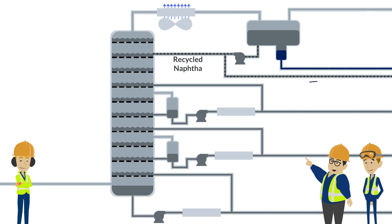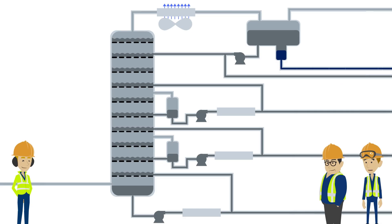The naphtha is either recycled back into the tower or is sent downstream for further treating before being sent to storage for gasoline blending.